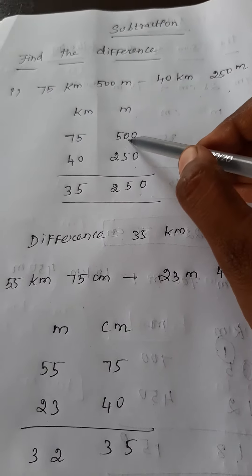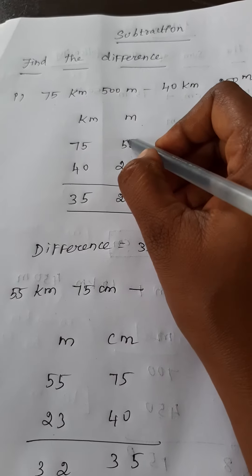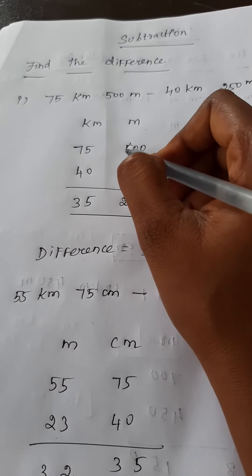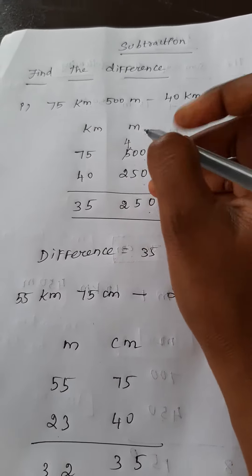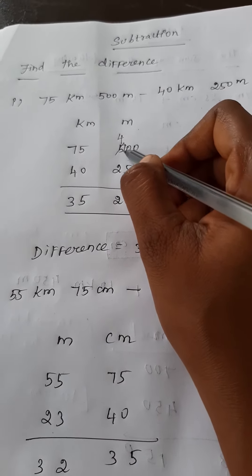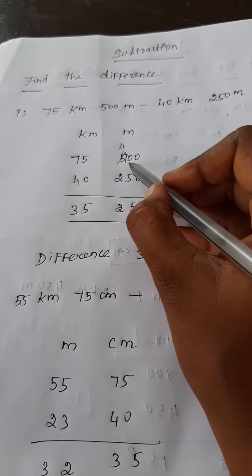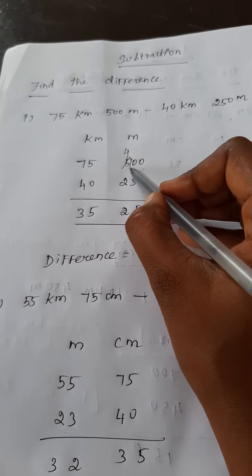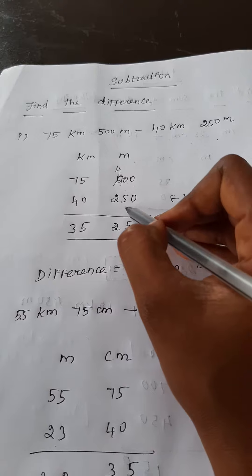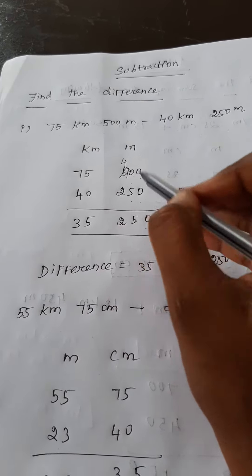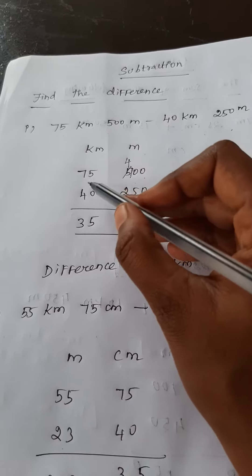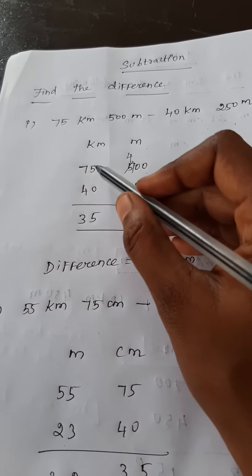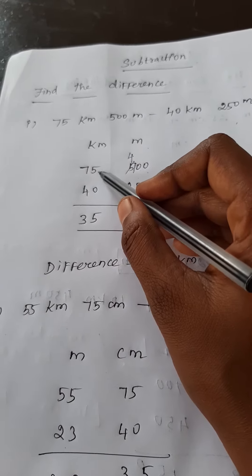Now I subtract that. Zero minus zero, what is the value? Zero. Here zero only half, so I will borrow one number from five. I have one borrow from five. What is the value? Four. So that one I write before the zero. So now that zero converted into ten. Ten minus five, what is the value? Five. Four minus two, what is the value? Two.